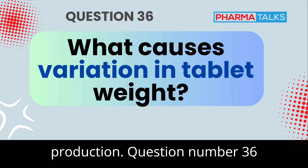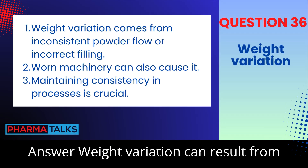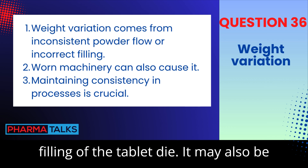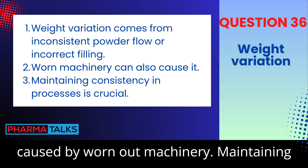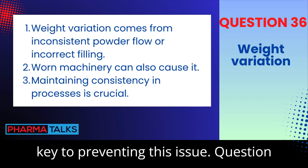Question 36: What causes variation in tablet weight? Weight variation can result from inconsistent powder flow or improper filling of the tablet die. It may also be caused by worn-out machinery. Maintaining consistency in production processes is key to preventing this issue.